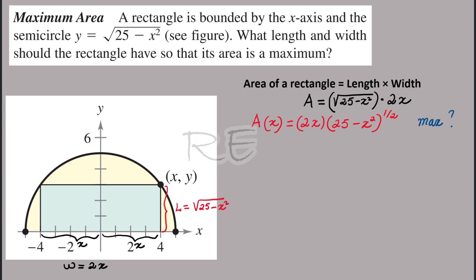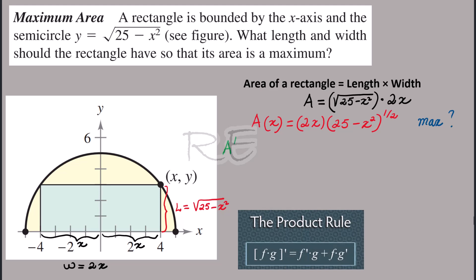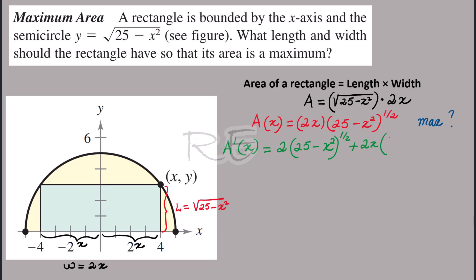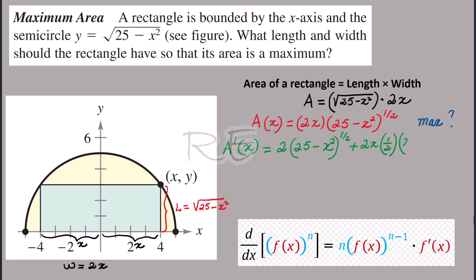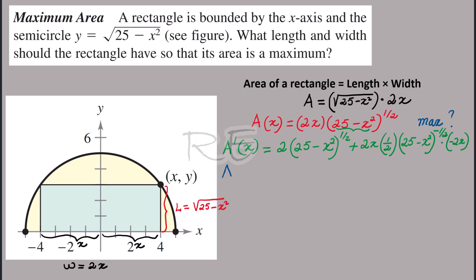Now we're looking for the maximum and we have a product. The derivative A prime of x will be the derivative of 2x, which is 2, times (25 minus x squared) to the one-half, plus 2x times the derivative of (25 minus x squared) to the one-half. Using the chain rule: one-half times (25 minus x squared) to the negative one-half, times the derivative of the inside, which is negative 2x.